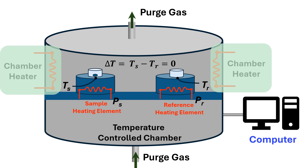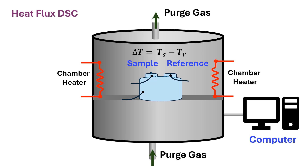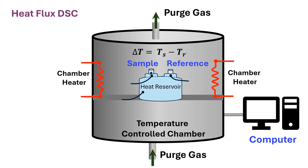For example, if we want to determine oxidation, then oxygen could be used as the purge gas. In heat flux DSC, a temperature control chamber containing two cylindrical metal blocks is used for placing the reference pan and sample pan. These metal blocks are placed on a metal heat reservoir containing one heating element. The sample and reference are heated or cooled at a constant heating or cooling rate — that is, degrees C per minute.